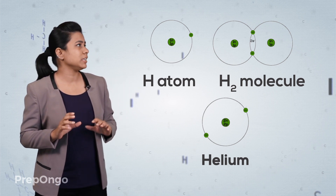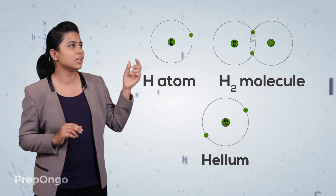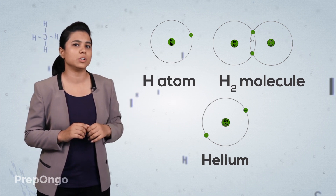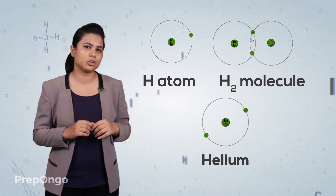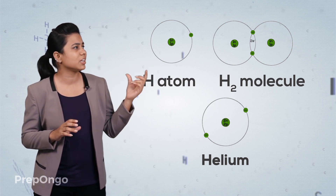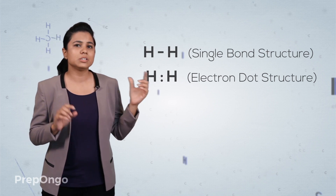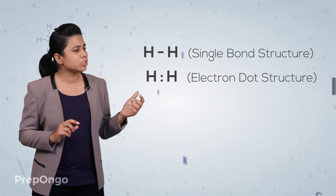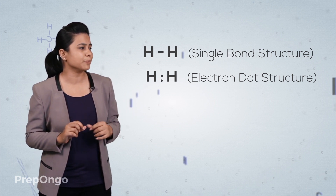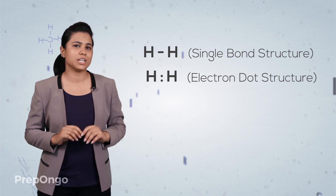Hydrogen has one electron in its outermost shell and one proton in its nucleus. Two hydrogen atoms combine and share their electrons to attain the nearest noble gas configuration. They can be represented by a single bond since they are sharing one electron each. In the dot structure, the two dots represent one electron each from each atom.